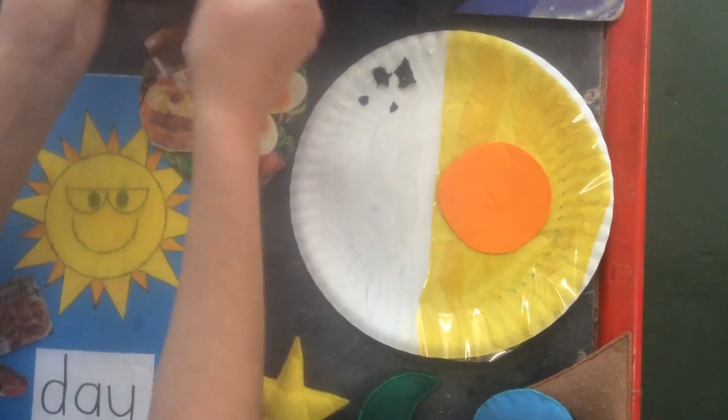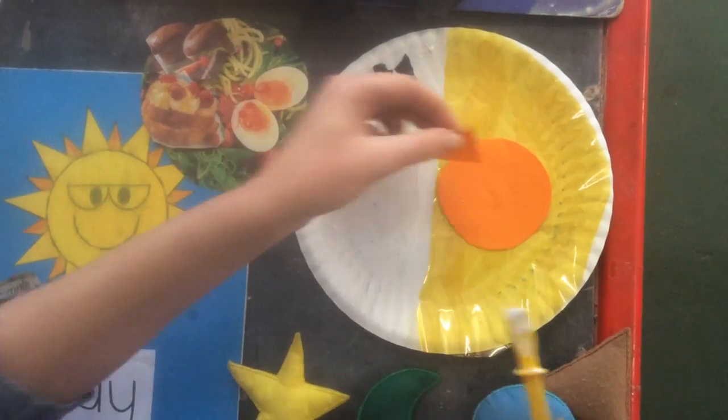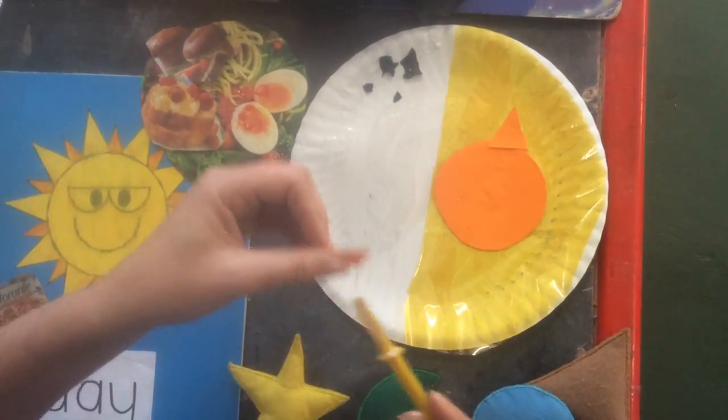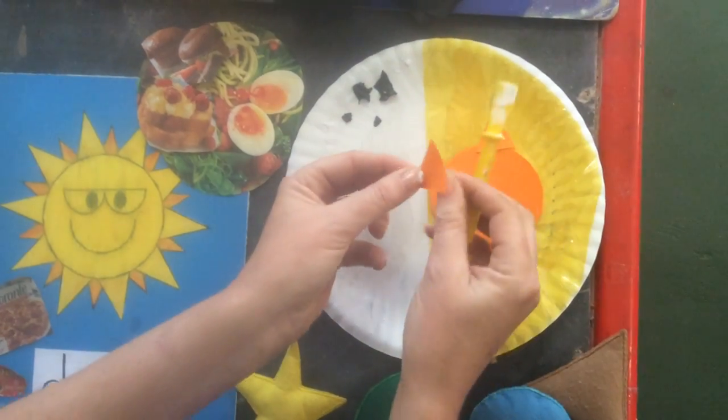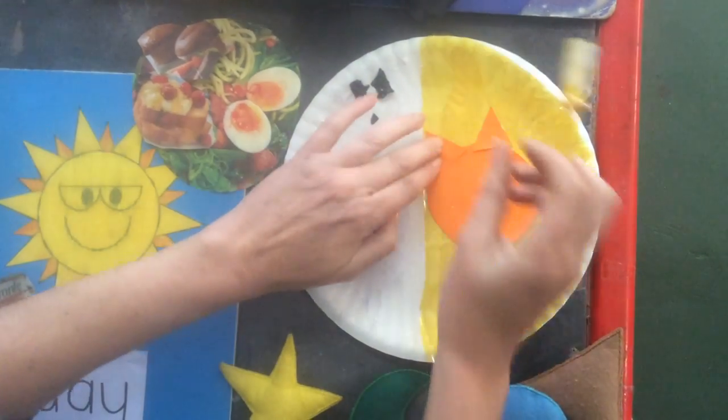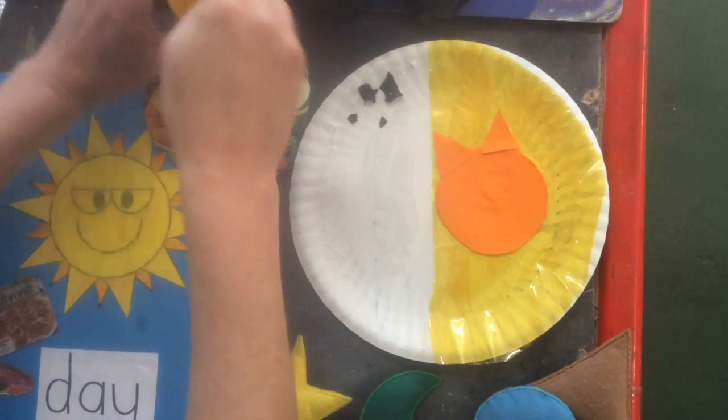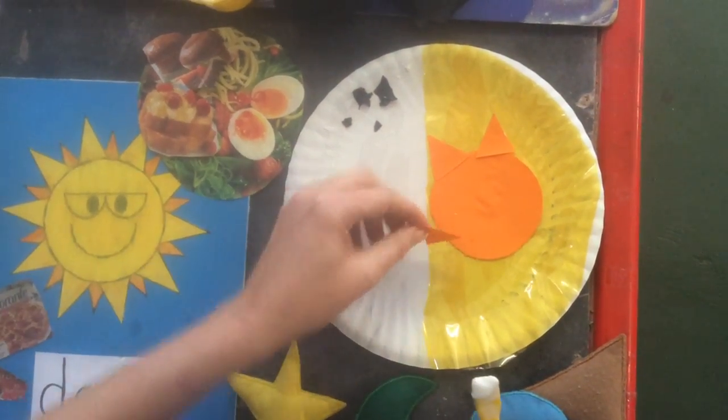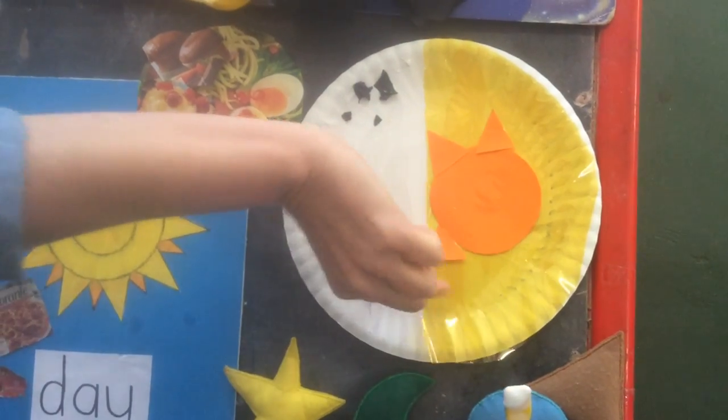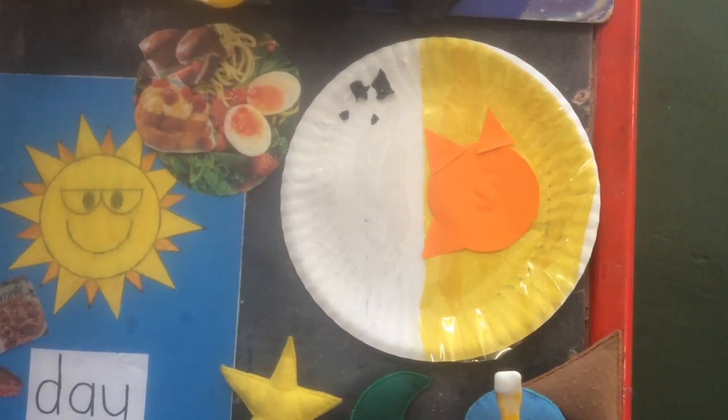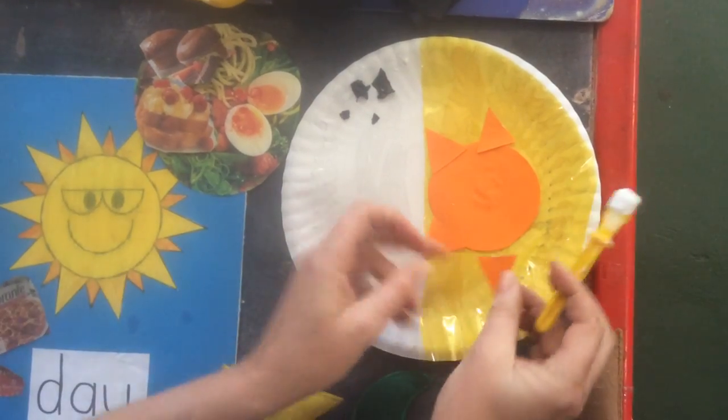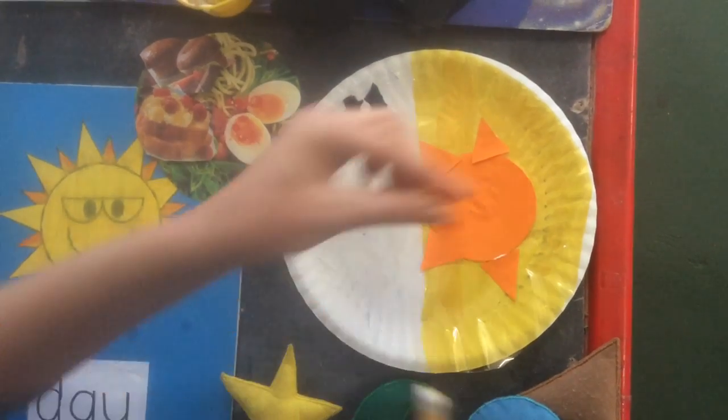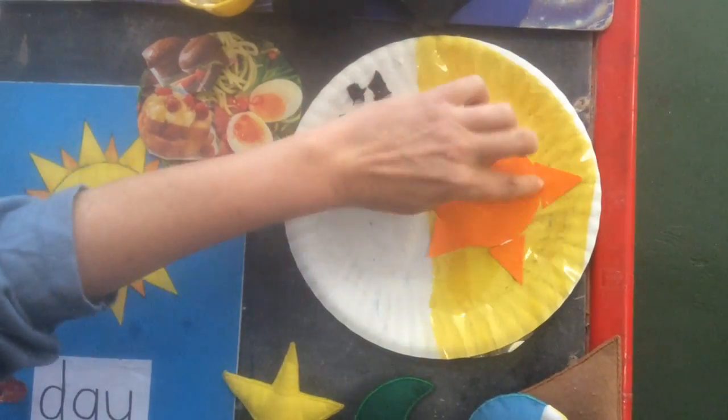It's a triangle and these are my rays from the sun. I'm going to put a triangle there and this is where the sun shines, with rays of light coming from the sun to lighten up my day and make it day.